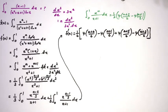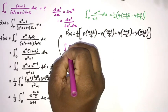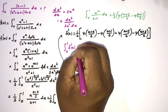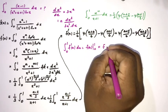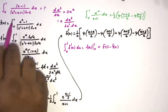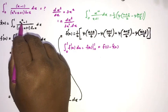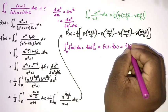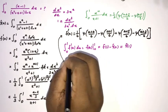Now we integrate f'(a) from zero to one. We know the integral of f'(a) from zero to one equals f(1) minus f(0). Since f(1) equals our original integral and f(0) equals zero (because x to zero minus one = 0), the original integral equals f(1), which equals the integral of f'(a) da from zero to one.